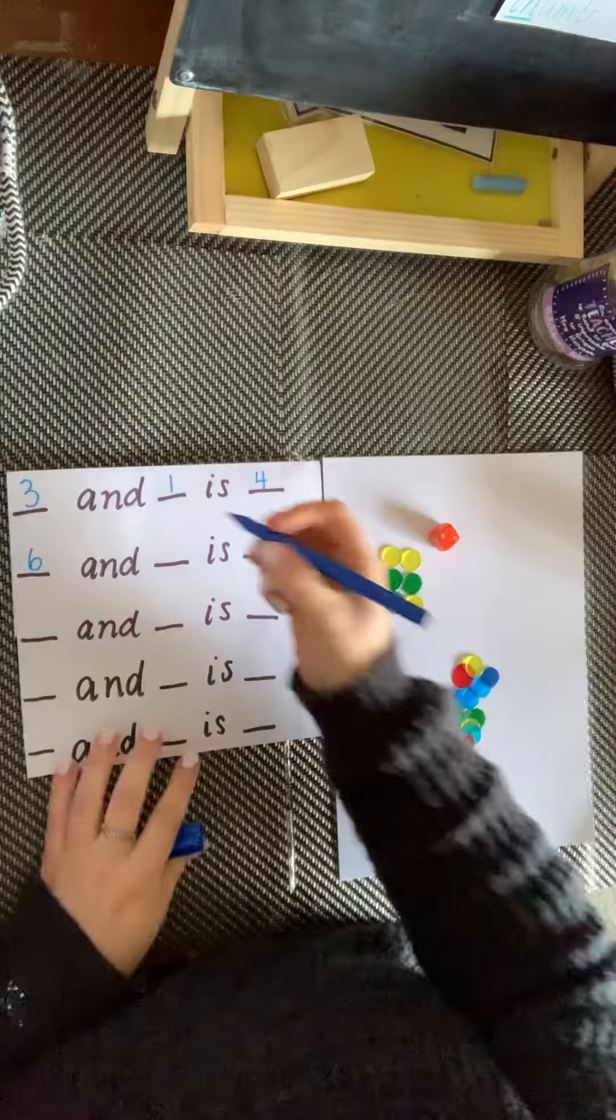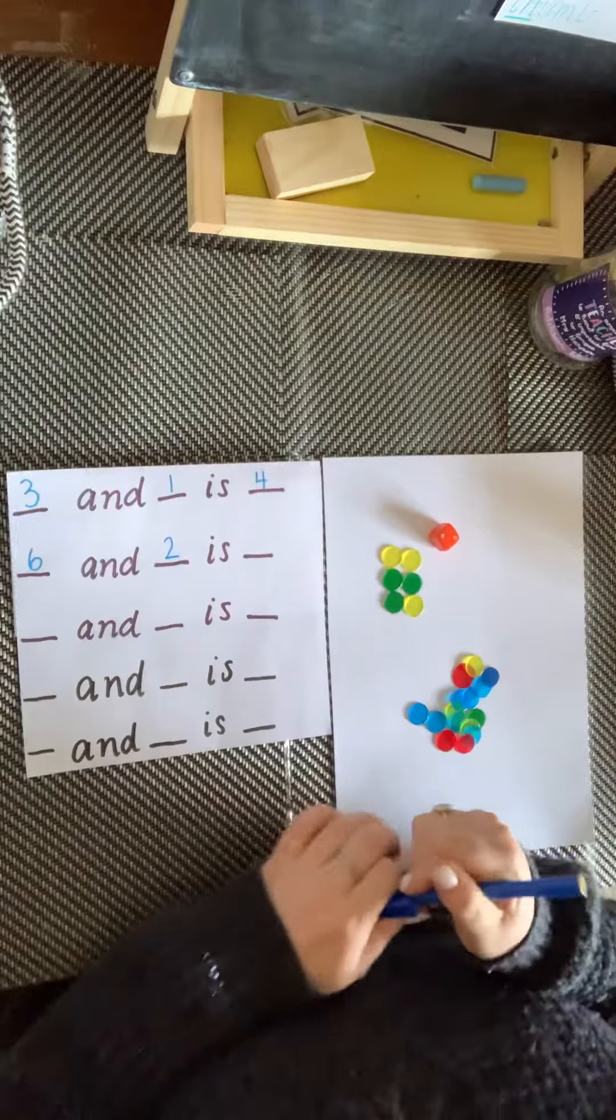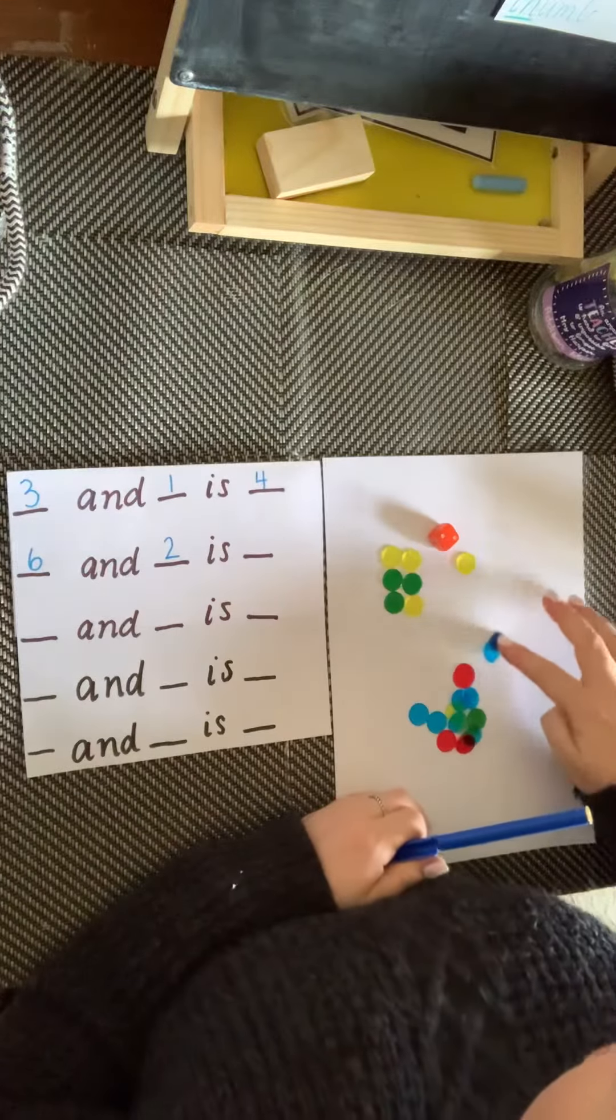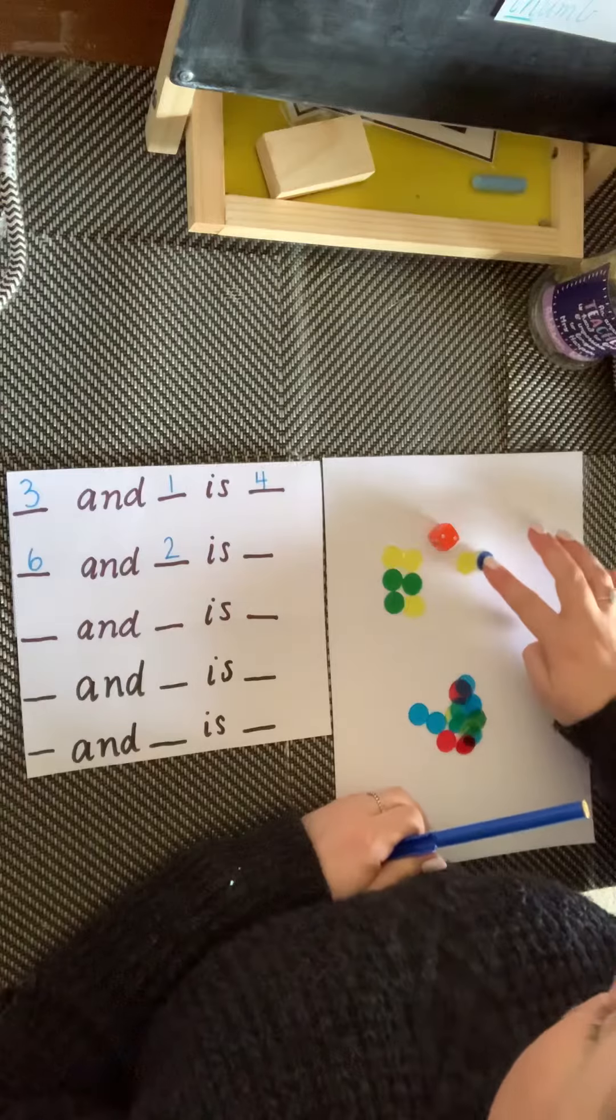Two. Write the number. Collect that number of counters. One, two.